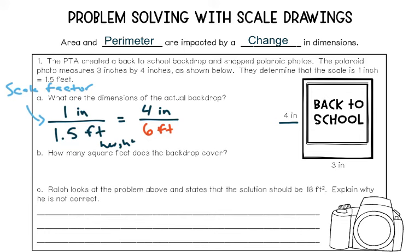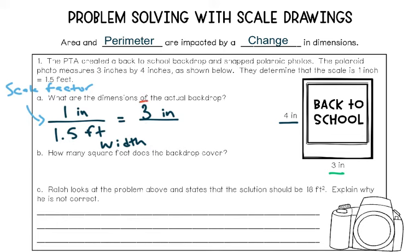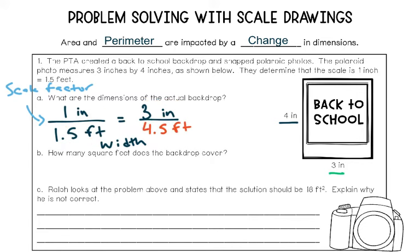Let's go ahead and solve now for the width. I'm still going to use the scale factor — that stays the same at 1 inch for every 1.5 feet. I know the width is 3 inches, so I need to plug 3 inches into my new ratio on the top, since inches has to match with inches. We want to solve for the missing value underneath. We cross multiply: 3 times 1.5 divided by 1. I got 4.5 feet — that would be the new width of our picture.